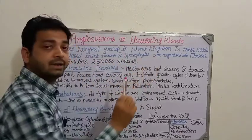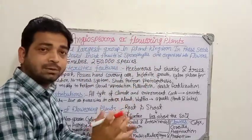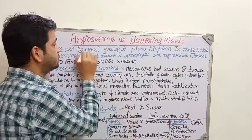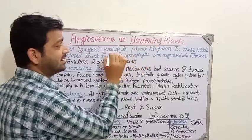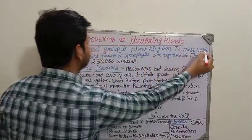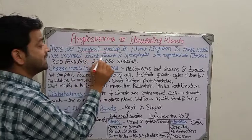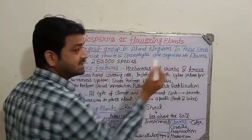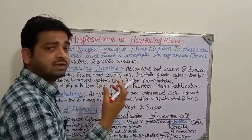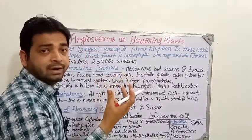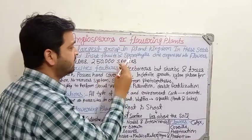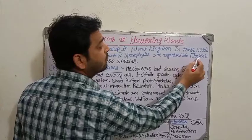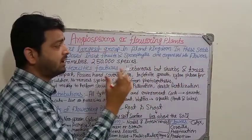These are the largest group of the plant kingdom. Whatever different divisions and categories are there, these flowering plants are the largest group. In these, seeds are enclosed inside the fruit — for example, mango, where the seeds will be there inside the fruit. In the same way, the sporophylls are organized into flowers.